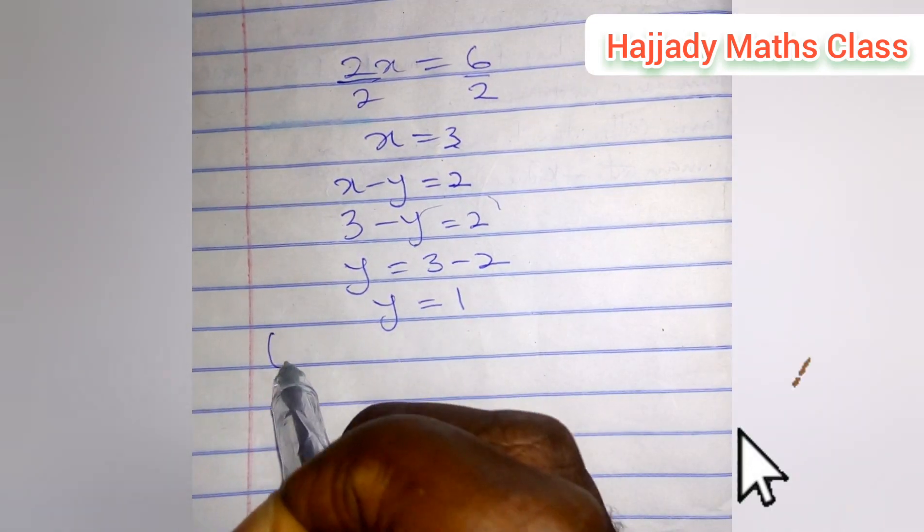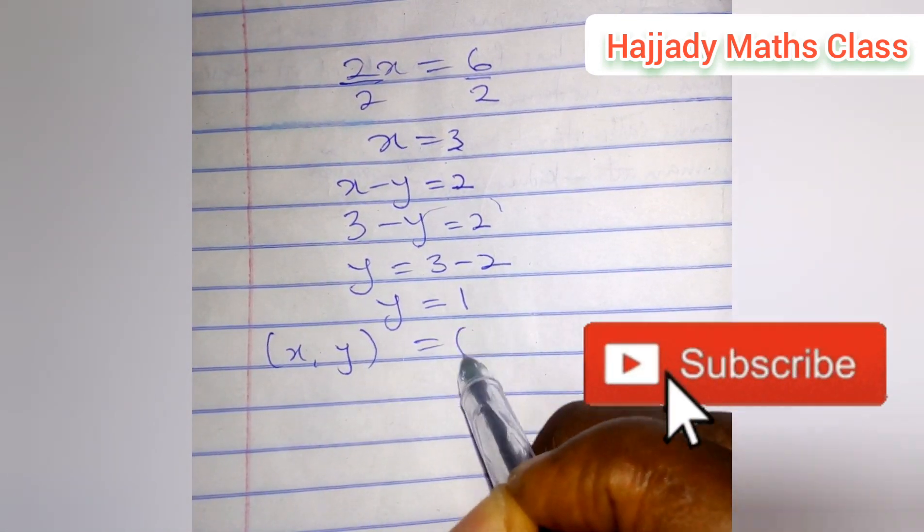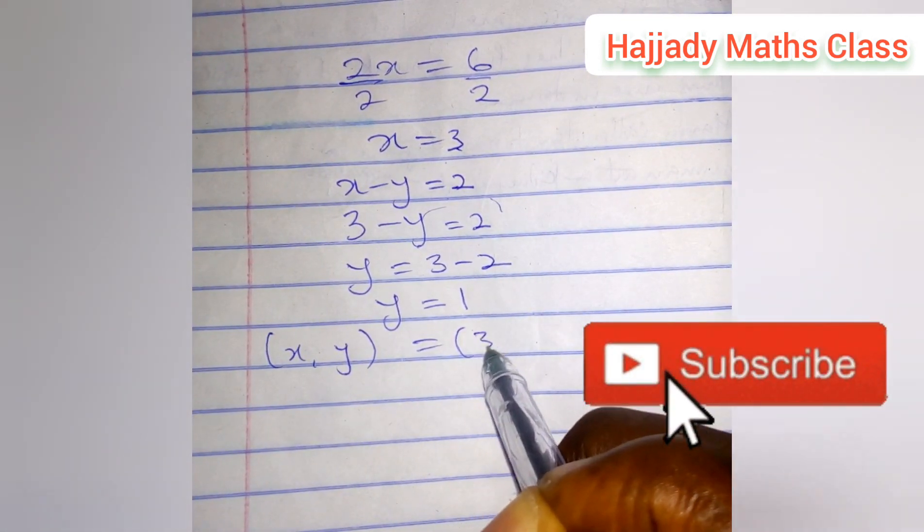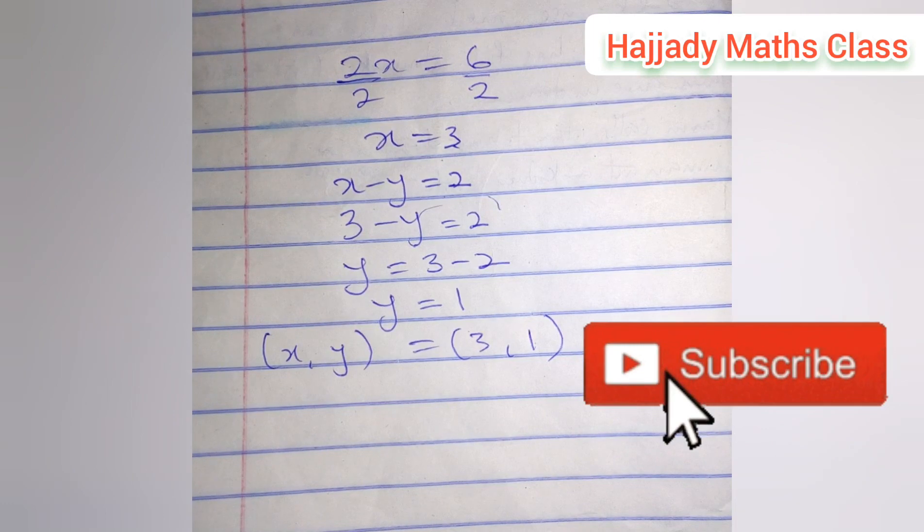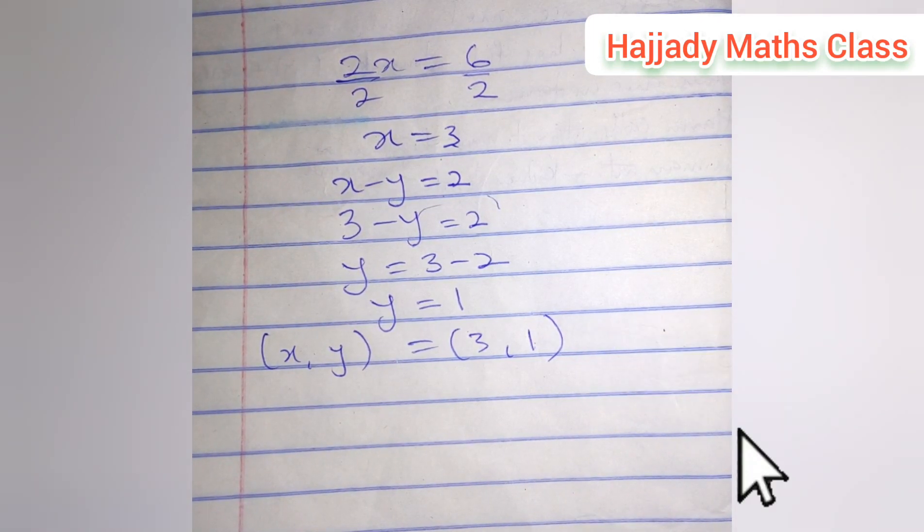So the value of x and y in coordinate form is now 3, 1. Thank you and please don't forget to subscribe to our channel. See you next video.